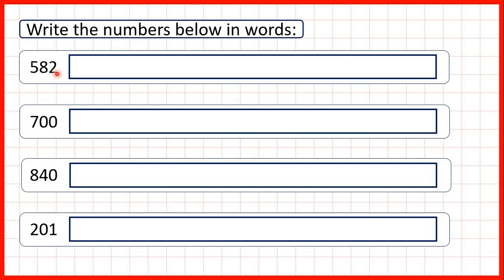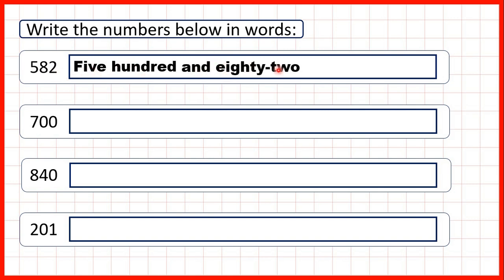First, we can see that we have a five as our hundreds digit, so we can write five hundred. Notice it's five hundred, not five hundreds. If I'm talking about the digit, I might say that we have five hundreds in this number, but when writing the number in words, we write five hundred. Then we know that after our hundreds digit, we have our tens and ones digits. Taking these together, we have an eight and a two, so that's eighty-two. That means our number is five hundred and eighty-two — with the word 'and' after the word hundred, and a hyphen between the eighty and the two.